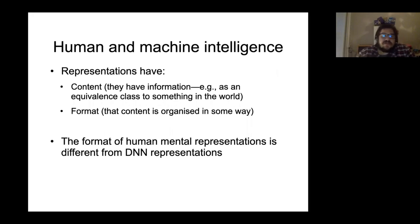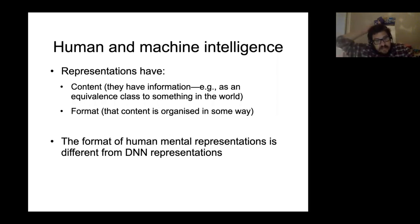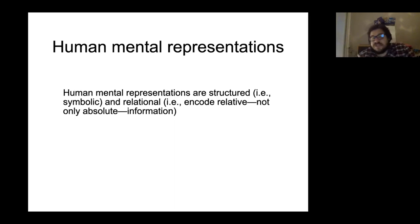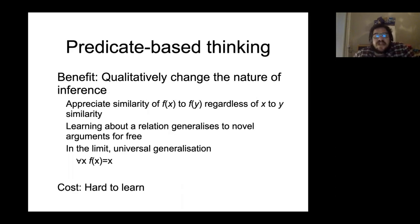Representations have format and content. The content is information that stands in an equivalence class of something in the world, but they also have a format — the content is organized in some way. The format of human mental representations is very different from the format of representations that deep neural networks learn. Humans learn mental representations that are structured — symbolic and relational — they encode relative, not only absolute information, and deep neural networks just at present don't do that.